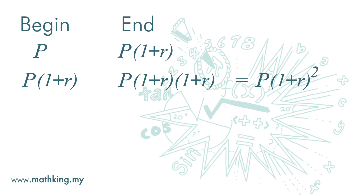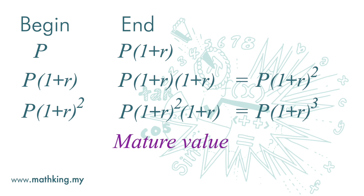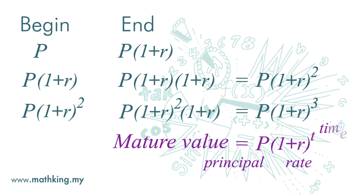Again, this amount becomes the principal at the beginning of the third year. And by the end of the third year, this amount will become P times (1 plus R) squared. So for compounding interest, the total amount — including the principal and interest — that we will get at the end of the period, which is called the matured value, is P times (1 plus R) to the power of T, where P is principal, R is interest rate, and T is time in years.